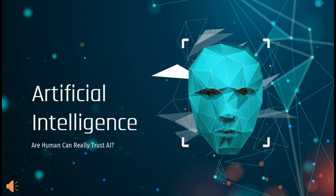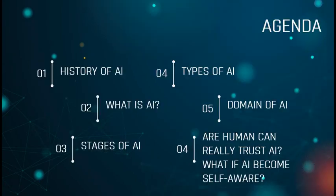Let us begin with the agenda. We begin the talk by understanding the history of AI, followed by understanding what exactly AI is. After that, we will discuss the different stages and types of AI. Besides that, we have the domains of AI, and we will finally end the session with whether humans can really trust AI, and what if AI becomes self-aware.